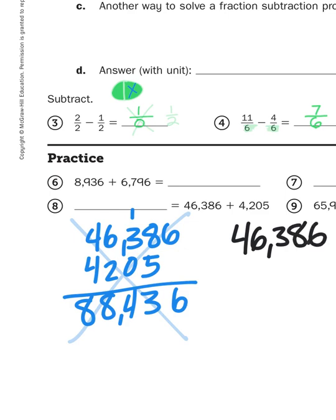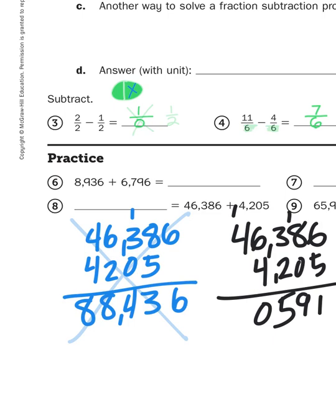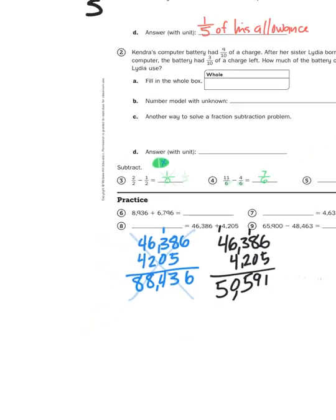46,386 plus 4,205. 6 plus 5 is 11. Carry the 10. 1 plus 8 is 9. 3 plus 2 is 5. 6 plus 4 is 10. And carry that 10,000. And it gives me a total of 50,591. So place value is important. It may not seem that way when you're looking at a bunch of numbers, a bunch of digits all in a row, but it is. It carries a lot of weight.